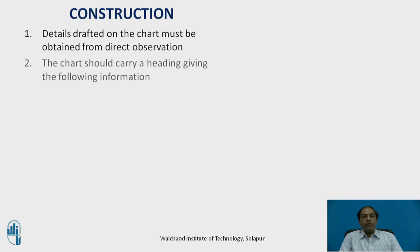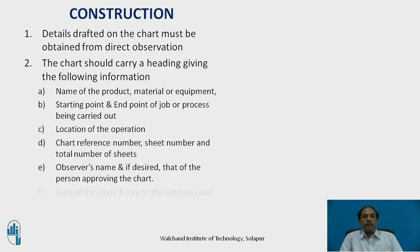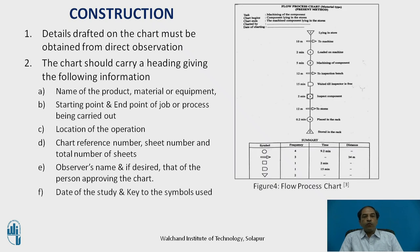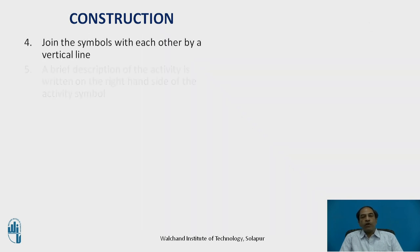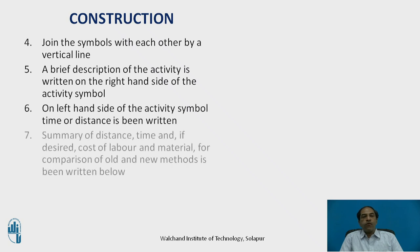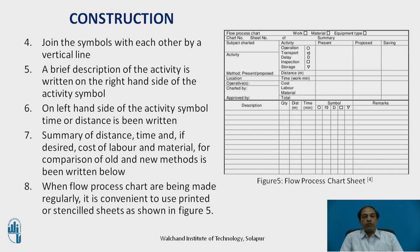This is the construction section where a step-by-step procedure for constructing the flow process chart is given. You have to follow the chart symbols and draw a flow process chart accordingly. The flow process chart will indicate the total summary of the process. When process charts are being made regularly, it is convenient to use a printed or standardized sheet as shown in the figure.